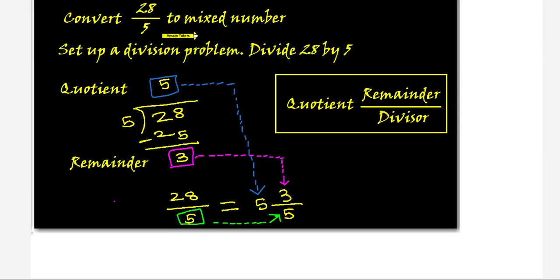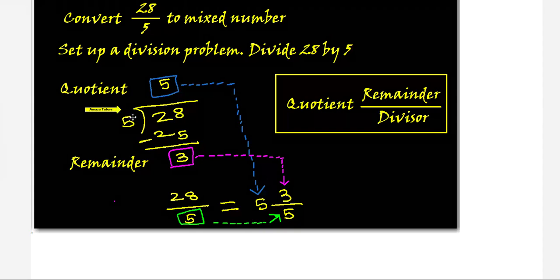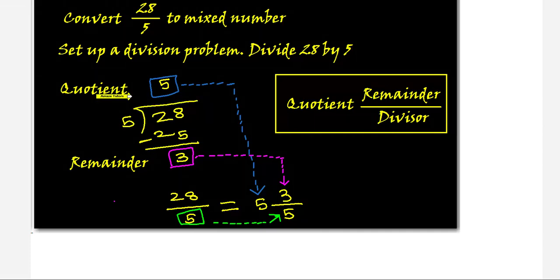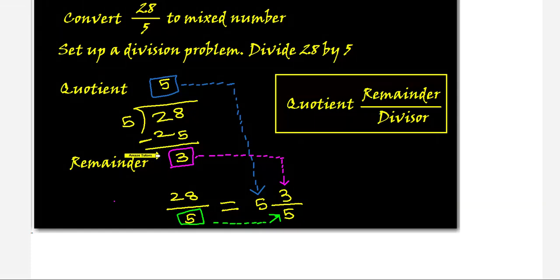It can be long division or short division — you know division very well! Divide 28 by 5. I am setting up the division problem: write 28 inside and 5 outside the division symbol. Now do the division as usual — check how many 5's go into 28. 5 fives are 25, so write 25 and subtract.